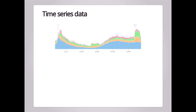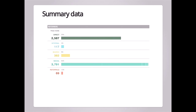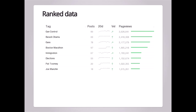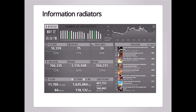Some different kinds of data that we play with in our platform include time series, summary data that might do aggregates and grouping by different categories, ranked data that might group content by different tags or topics, and benchmark data that might compare how certain content has performed relative to the past. In general, we refer to information radiators that bring all this data together — real-time streams, historical streams — and showcase how content is moving on their websites.